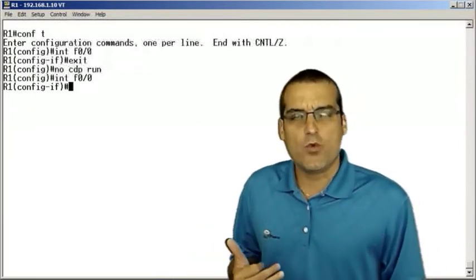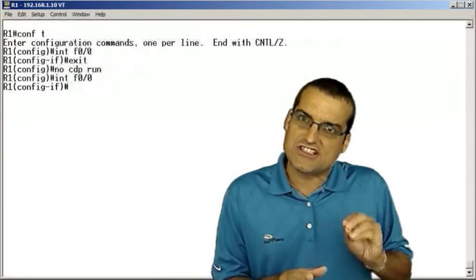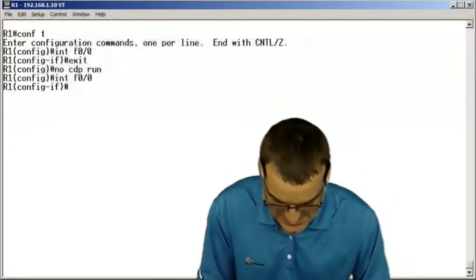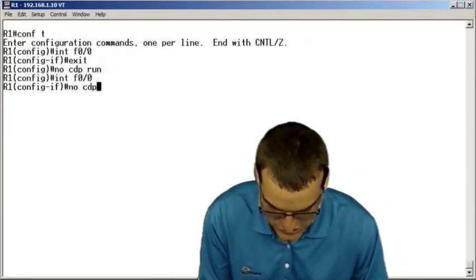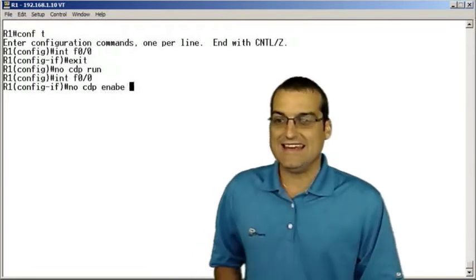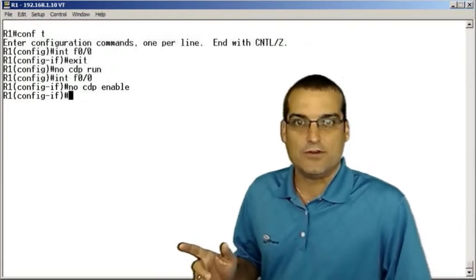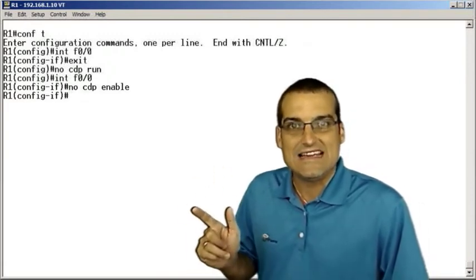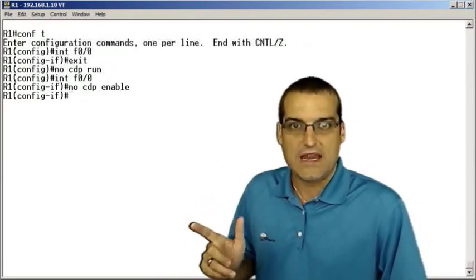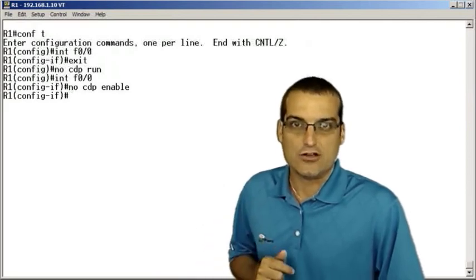Now, what's much more common is we typically want to trim it off just a single interface. If this is the case, we would go in and say 'no CDP enable'. And you've got to spell that right, obviously. 'No CDP enable' - that's how easy it is to turn off this behavior on a particular interface.